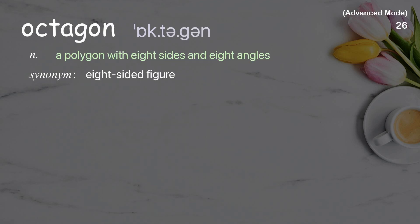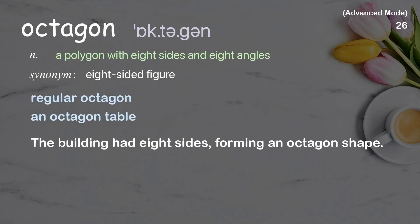Octagon: A polygon with eight sides and eight angles. Examples: Regular octagon, an octagon table. The building had eight sides, forming an octagon shape.